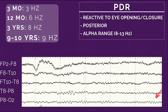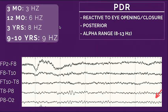The third important characteristic — something I learned from my mentor Dr. Jagavala during residency — is that the PDR is reactive to eye opening and closure. When somebody has their eyes open you should not see PDR; when they close their eyes the PDR pops up. Finally, PDR is not present in children the same way as in adults. At three months the normal PDR is around 3 Hz; at one year around 6 Hz; at three years about 8 Hz; at nine to ten years about 9 Hz; and after that it becomes the same as adults.